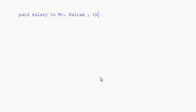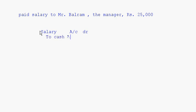Let's take one more: paid salary to Mr. Balram, the manager, Rs. 25,000. Salary is an expense — it is a nominal account. Debit all expenses and losses, so salary account will be debited. For paying the salary, cash is going out, so it is salary account to cash account. Though the name of the manager is given, you are not concerned with the personal account of Mr. Balram.